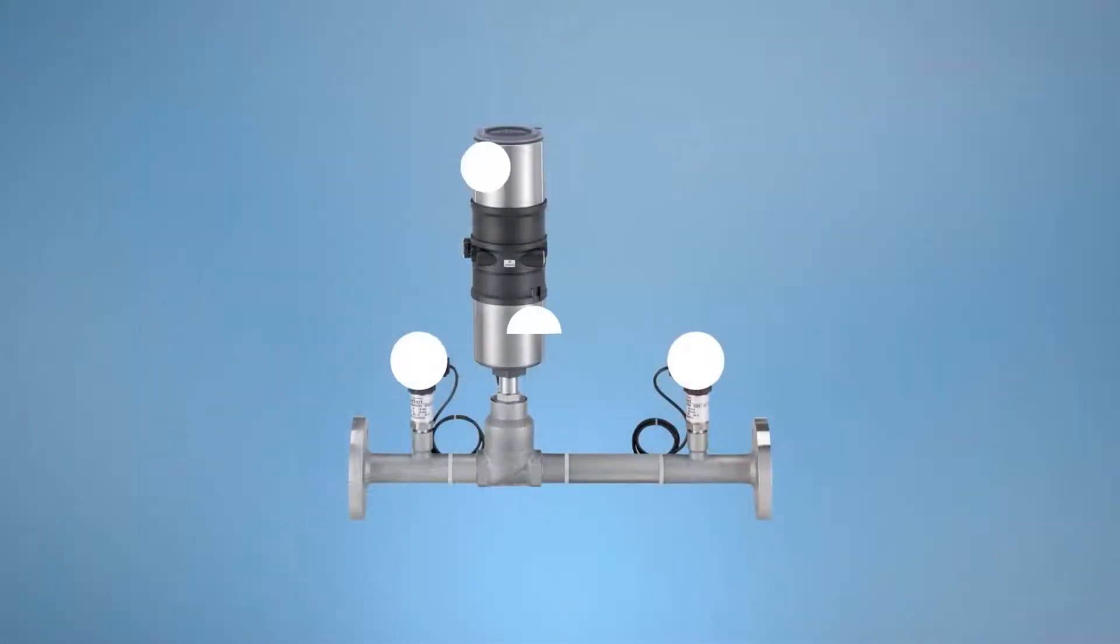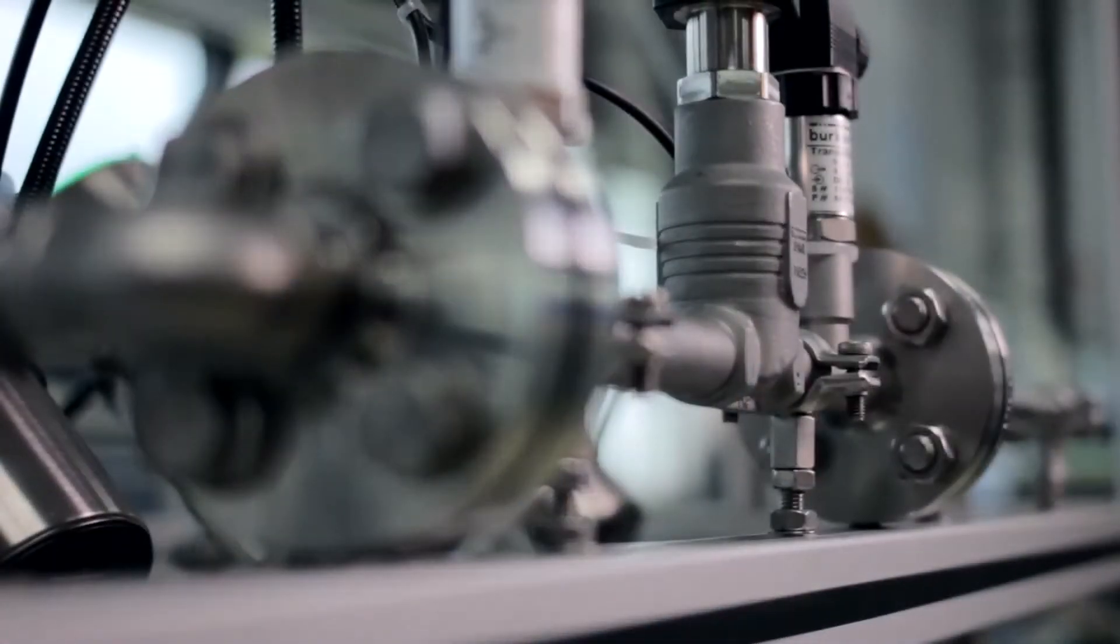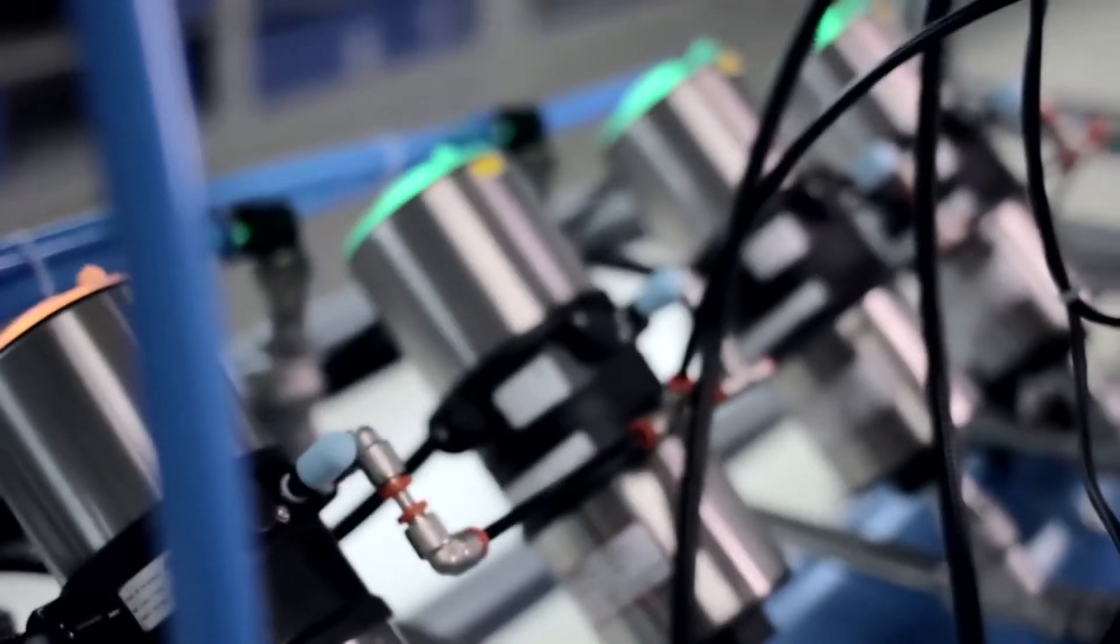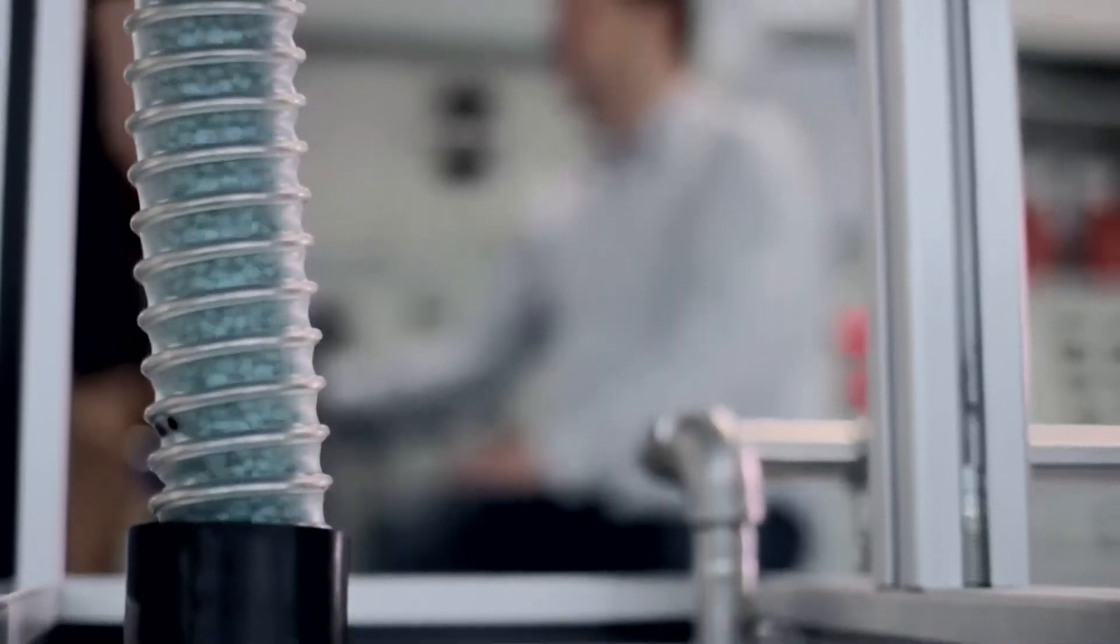The two pressure transmitters feed back the pressures before and behind the valve orifice to the controller. The controller can calculate the flow value and then if the flow value deviates from the set point, the Type 8750 controller adjusts the valve automatically in order to reach the set point.